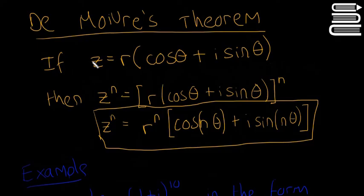It says if a complex number is written in the polar form like this, yes, we've seen this before, z equals r times cos theta plus i sine theta, then z to the power of n...